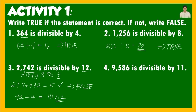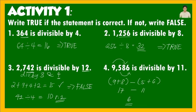Number 4: 9,586 is divisible by 11. Using the alternating digit rule: group (9 and 8) and (5 and 6). So: (9 + 8) minus (5 + 6) = 17 minus 11 = 6. Since 6 is neither 11 nor 0, the answer is FALSE.